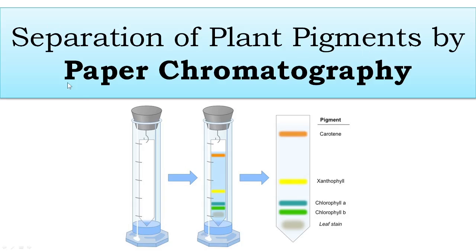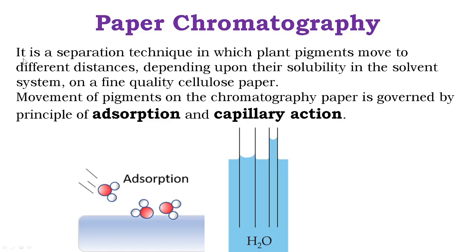Paper chromatography is a separation technique in which the plant pigments move to different distances, depending upon their solubility in the solvent system, on a fine quality cellulose paper, also called Whatman paper or chromatography paper. The movement of these pigments on the chromatography paper is governed by the principle of adsorption and capillary action. Paper chromatography is an example of these two scientific principles.